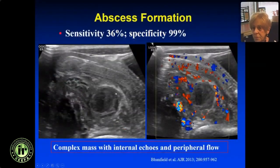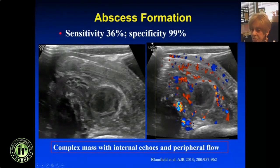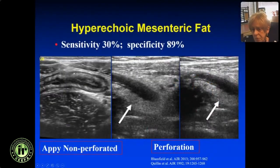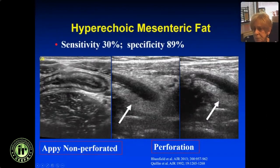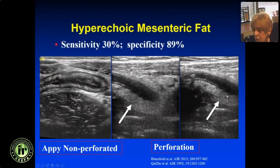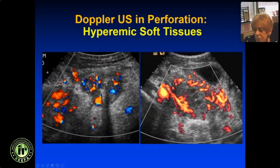An abscess is a sign of perforation. It looks like an abscess anywhere in the body — round, complex mass with scattered internal echoes and lots of flow in the soft tissue. That's perforation. Highly specific for perforation; we see an abscess maybe 35-36% of the time. With perforation, the mesenteric fat gets very echogenic — it's trying to wall off the perforation — and you'll see that in about 30% of cases. Here's an appendix where you've lost the mucosa and there's loss of echogenic fat. Here's another with lots of echogenic fat and an abscess with a lot of flow in the soft tissues.